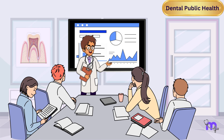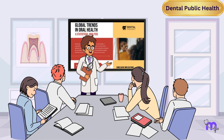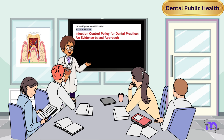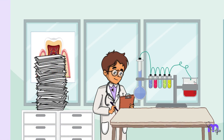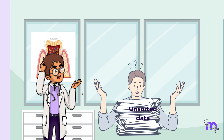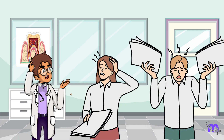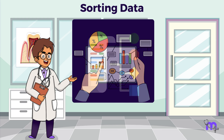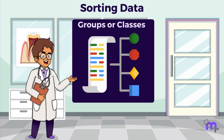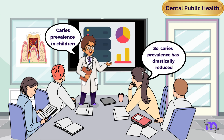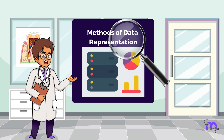Public health dentistry relies on accurate and compelling data to identify oral health trends, assess the impact of interventions, and develop evidence-based policies. The data collected from experimental works, surveys, etc. consists of unsorted data and is not very helpful in understanding the underlying trends. Therefore, the next step is to sort this data and classify it into characteristic groups or classes. Presenting data clearly and concisely is crucial for effective communication and maximizing its impact. Let's now explore the various methods through which we can represent data.